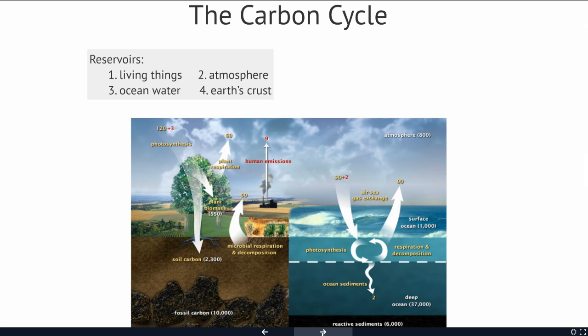There's a lot of carbon in ocean water, also in the form of carbon dioxide, but it's dissolved CO2. And there's a lot of carbon in the Earth's crust, mostly in the form of rock and fuels.